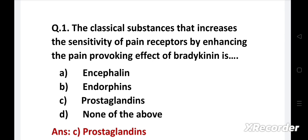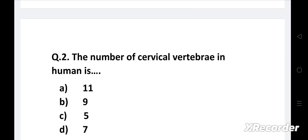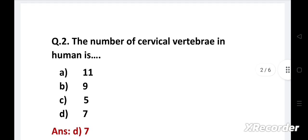Next question: The number of cervical vertebra in human is: Option A - 11, B - 9, C - 5, D - 7. Right answer is Option D - 7. There are 7 cervical vertebra, 12 thoracic vertebra, 5 lumbar vertebra, 5 fused sacral vertebra and 4 fused coccygeal vertebra.